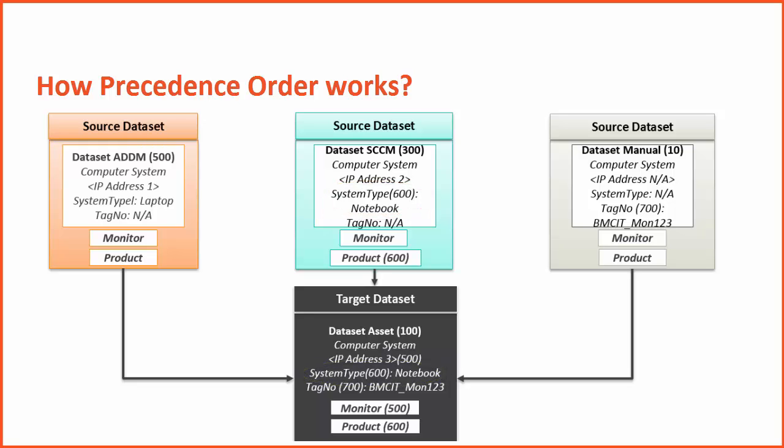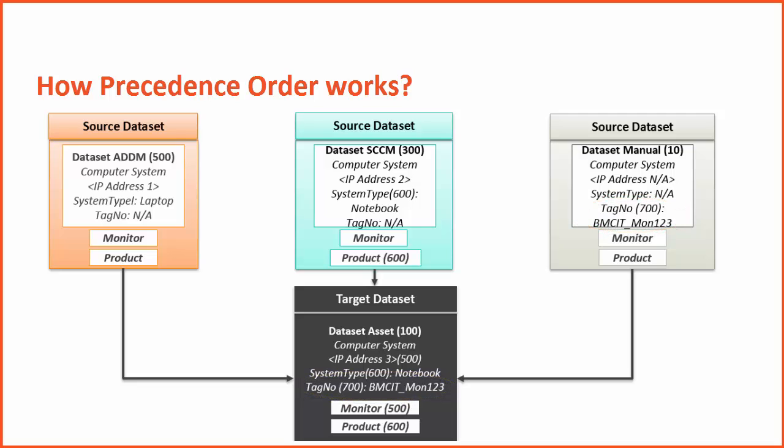Similarly, when you run the job for the manual dataset, the CI tag attribute in the manual dataset has higher precedence than that in the SCCM and ADDM datasets. Hence, the CI tag attribute in the manual dataset overrides the CI tag attribute in the target dataset. This is how the attribute's precedence works based on the configured precedence order.